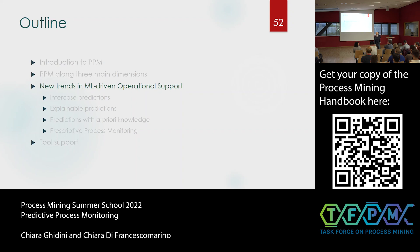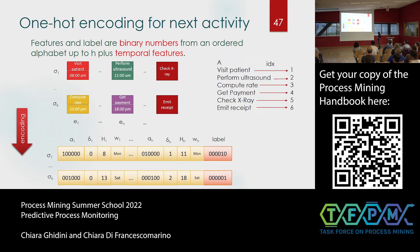On a question about calculating delta on slide 47: since the first event has no previous event, delta is always 0. For subsequent events, delta is simply the time difference between the previous event and the current event — for instance, one hour difference or two hours difference between consecutive events. The timestamps were not explicitly shown in the slide, but that is the calculation.